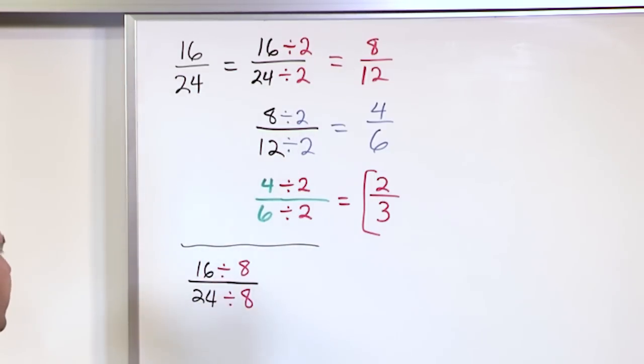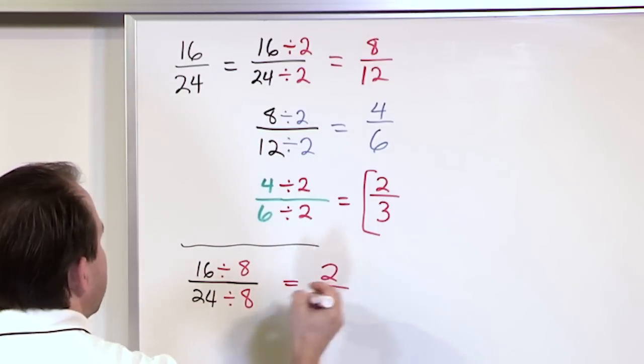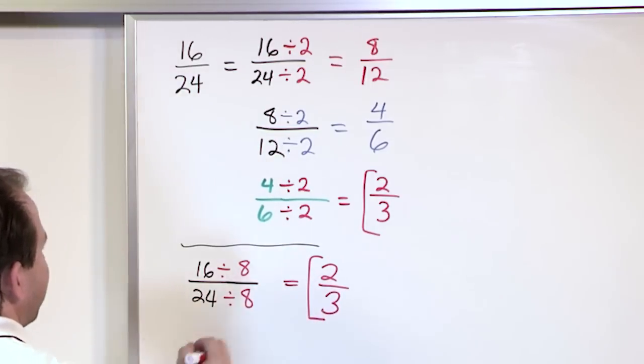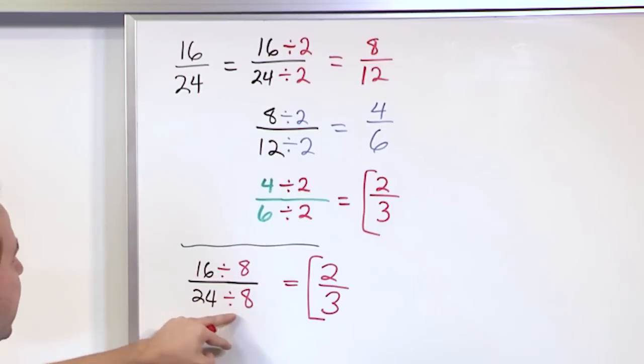But if you were to notice that you can divide the top by 8 and divide the bottom by 8. If that was the thing that popped into your head then what you would get 16 divided by 8 is 2. 24 divided by 8 is 3. So you would get two-thirds because 8 times 3 is 24. So what I'm trying to say is if you happen to see the biggest number that you can divide in you might arrive at the answer in one step.